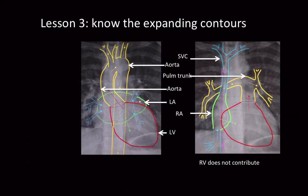The third lesson is to know your outline. It's quite difficult to teach without a picture, so I've shown some anatomical structures that make up the outline. You can see that the aortic arch, whether the ascending or descending aorta, makes up part of the cardiac outline. The left atrium is a small segment, and the left ventricle as well. If you look at the picture on the right, the right cardiac margin does not contribute to the outline of the heart.